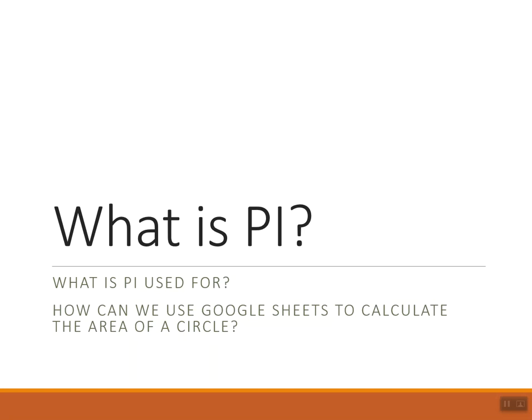So first off, when we look at the symbol for pi, we use the Greek symbol pi, and you see all these Greek symbols on here. That's the representation for pi. When we look at what pi is, pi is a number that's represented by 3.14.